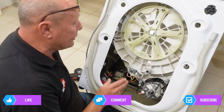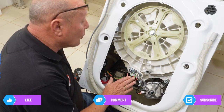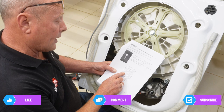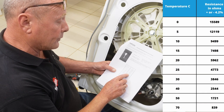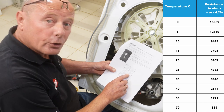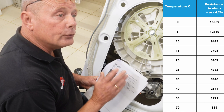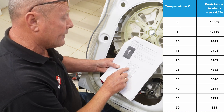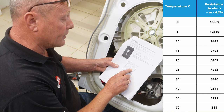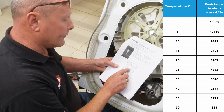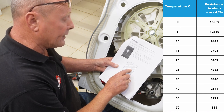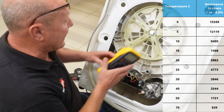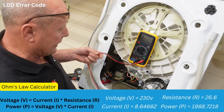We need to not only check the heating element and the NTC sensor, we also need to understand the values. For a 40-degree wash, the NTC sensor value is 2,544 ohms according to the workshop manual. We're at a room temperature of about 21 to 22 degrees right now. At 20 degrees, the reading should be 5,962 ohms, and at 25 degrees it should be 4,773 ohms. I'm going to set the multimeter up first and test the element, then we'll test the NTC sensor.